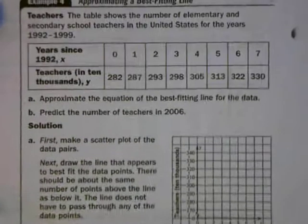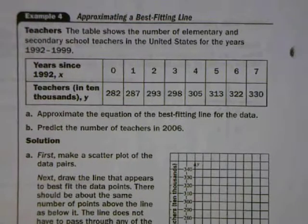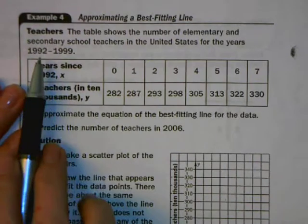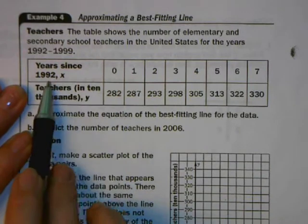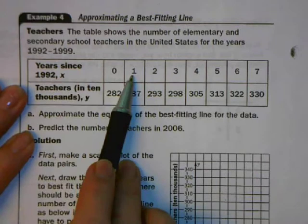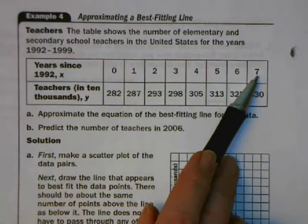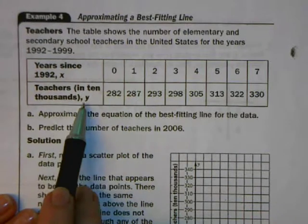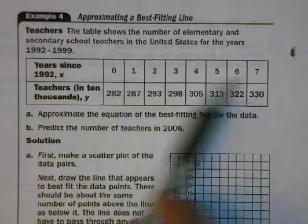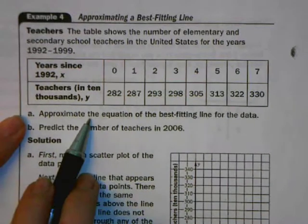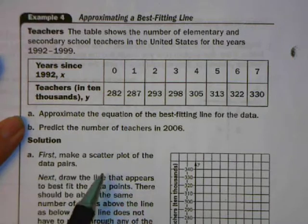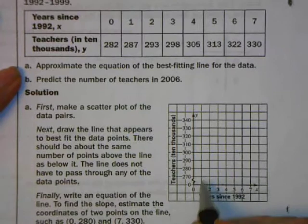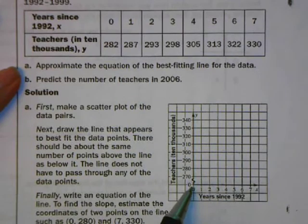Let's make use of this. The table shows the number of elementary and secondary school teachers in the United States for years 1992 to 1999. The x-coordinates tell us how many years it's been since they started tracking this data — x=0 is 1992, x=1 is 1993, and so on through x=7 for 1999. The y values show the number of teachers in ten-thousands. Part A says to approximate the equation of the best fitting line, so first we plot these x-y pairs on a graph. Notice the graph has a break in the axis, which is fine — you indicate that with the squiggly sign.